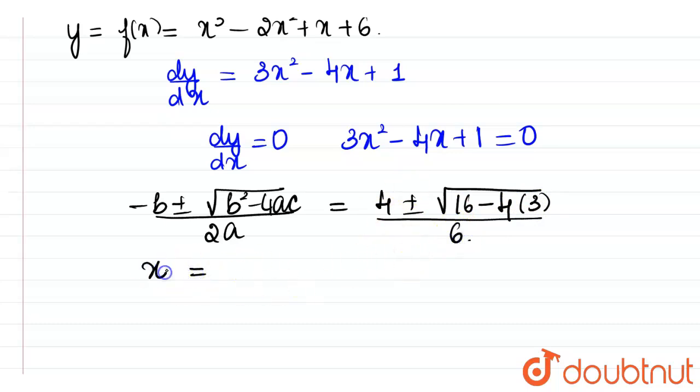Therefore, on simplification, the roots of x will be equal to 4 by 6 plus or minus, 16 minus 12 is 4, root 4 is 2, 2 by 6. So we will be getting 4 plus 2 by 6, that is 6 by 6, that is 1, or we will be getting 4 minus 2 which is 2 by 6. Therefore, the roots of the given function will be either x is equal to 1 or 1 by 3. So this will be the roots.